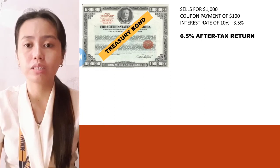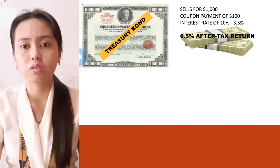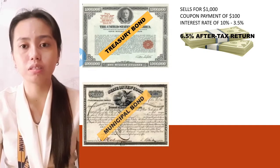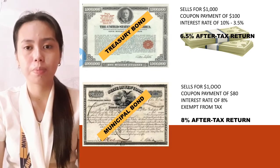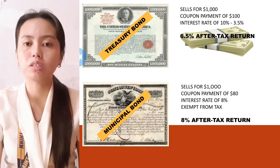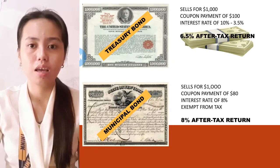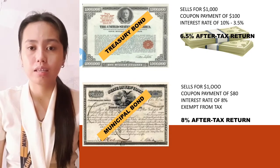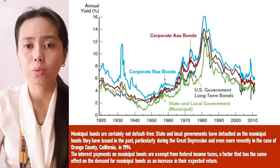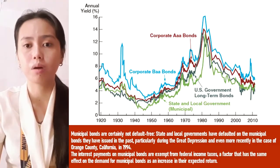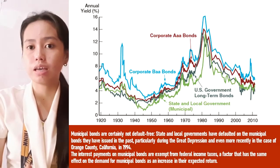You only earn 6.5% after taxes on the Treasury bond, although it has a 10% interest rate. Meanwhile, if you invest in a municipal bond that also sells for $1,000 but has a coupon payment of only $80, since the municipal bond is a tax-exempt security, you pay no taxes on that $80 coupon payment and you earn 8% after taxes. This is why people are willing to hold the riskier and less liquid municipal bond — because it has a higher after-tax return.